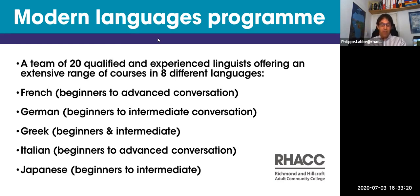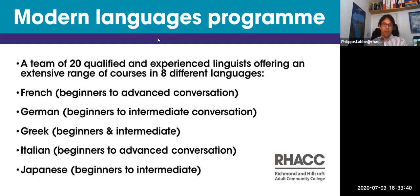We have a range of eight different languages and levels. We don't have to offer all levels per language because some languages may have more demand than others. Starting alphabetically with French, we arrange from beginners to advanced conversation and grammar — we have nine different levels in French.